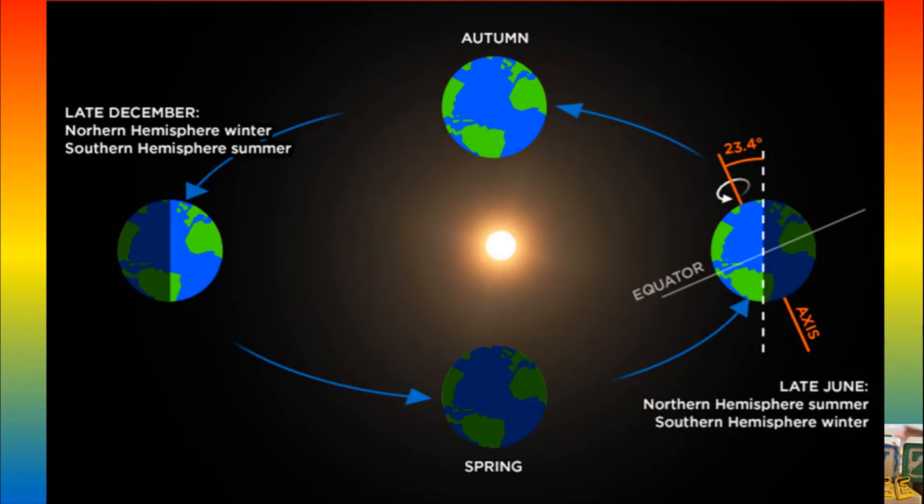On June 21, when the North Pole is inclined toward the sun and the South Pole away from it, the situation is reversed.